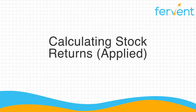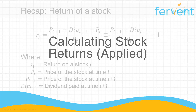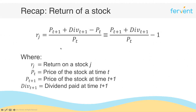In this video we're going to build on our knowledge and learn how to calculate stock returns using some real-world data. Just a quick recap: the general equation to calculate the return on a stock is pt+1 plus div(t+1) over pt minus 1. Alternatively, for a non-dividend paying stock, the div(t+1) term equals zero, simplifying to pt+1 over pt minus 1. Going forward, I'm assuming you're comfortable with this equation and understand how it works.